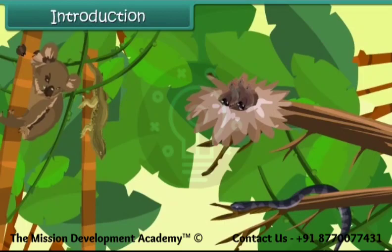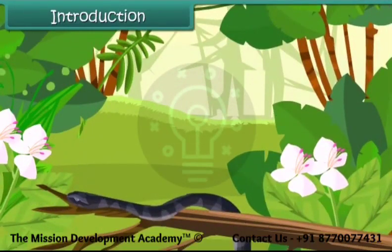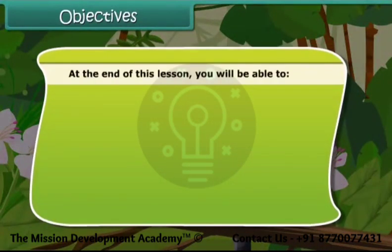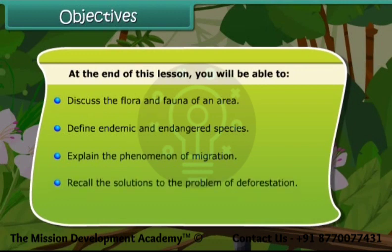Let us find answers about plants and animals of an area in this module. At the end of this lesson, you will be able to: discuss the flora and fauna of an area, define endemic and endangered species, explain the phenomenon of migration, and recall the solutions to the problem of deforestation.